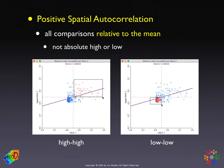Both of these quadrants suggest positive spatial autocorrelation. However, at this stage we don't know if this is statistically significant. But it allows us to think of spatial autocorrelation as decomposed into different parts of the data, reflecting positive or negative spatial autocorrelation.